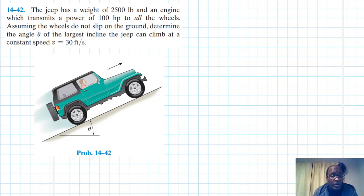Hello, I welcome you all. The problem reads that the Jeep has a weight of 2500 pounds and an engine which transmits a power of 100 horsepower to all the wheels. Assuming the wheels do not slip on the ground, determine the angle theta of the largest incline the Jeep can climb at a constant speed of 30 feet per second.